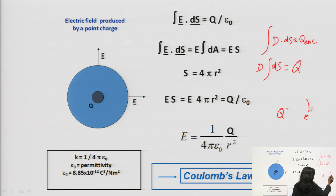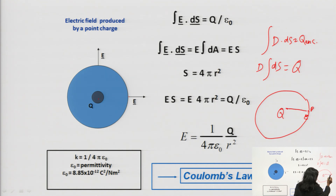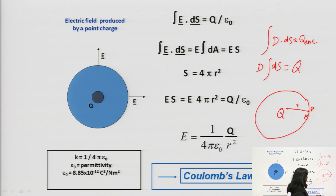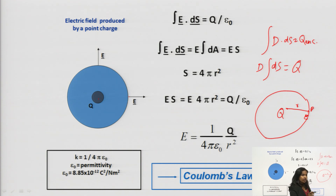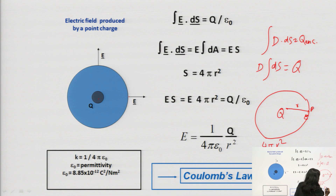As our point of interest is here, we will draw the Gaussian surface such that it will include the point P also. This sphere has radius r. According to Gauss law, D dot ds equals Q enclosed. For this sphere, the surface area will be equal to 4πr². So we will write 4πr² in place of ds, giving us D multiplied by 4πr² equals Q.